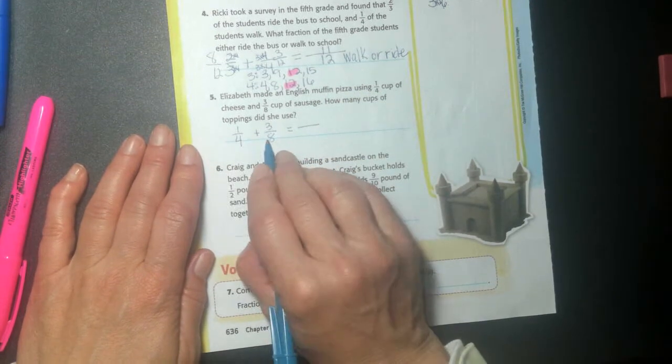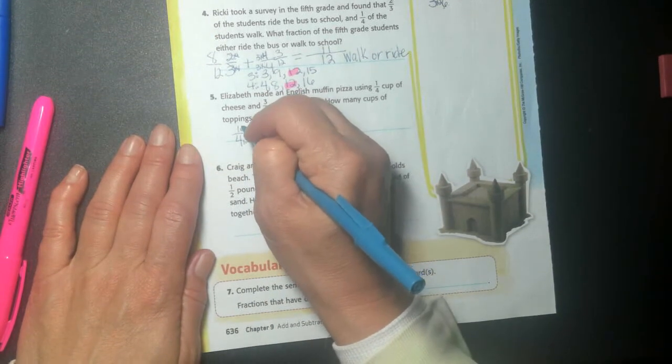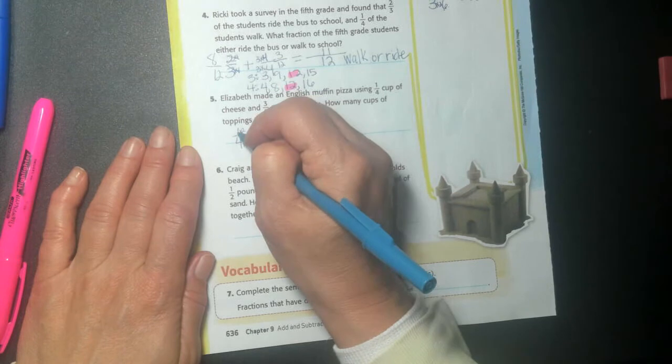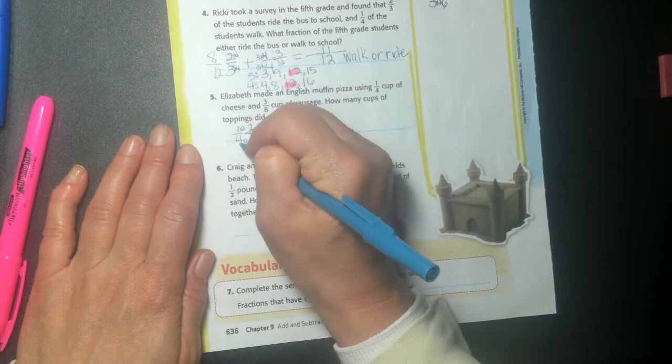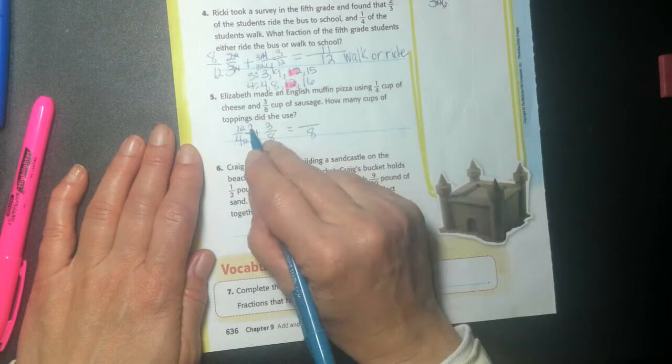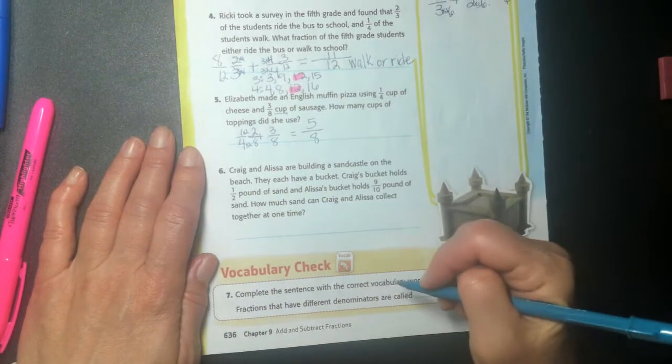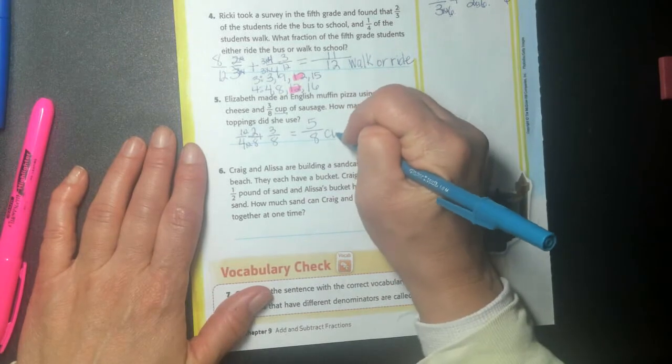I have to find my common denominator. I'm going to say eight. Right. I can turn my four into an eight by multiplying times two and whatever I do to the bottom, I have to do to the top. One times two is two. Four times two is eight. Eight, eight, eight. And two plus three is five. And we're measuring cups. So I'm going to put five eighths of a cup.